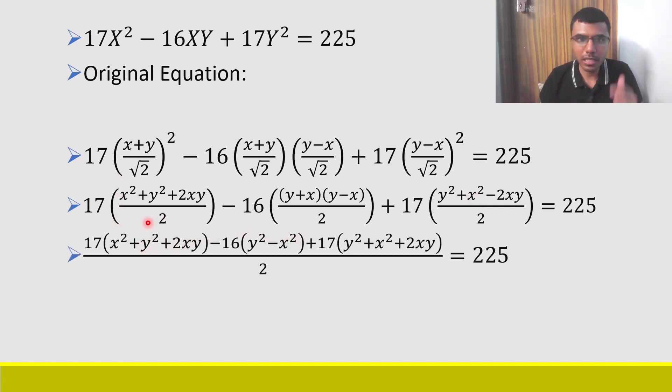Now if you see all three of them have the same denominator. Here the denominator is 2, here the denominator is 2, here also the denominator is 2. So you can just write all the numerators together along with the proper signs. Now here 17 times this bracket minus 16 times this. What is (y + x)(y - x)? It is y² - x².